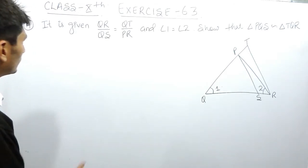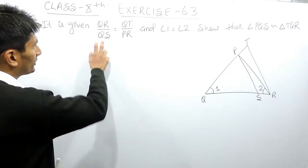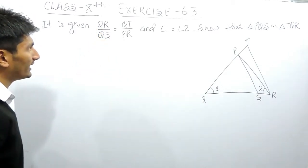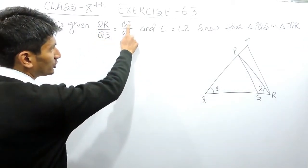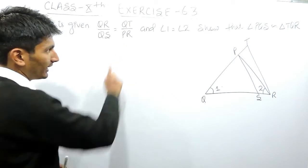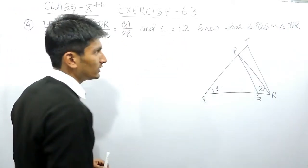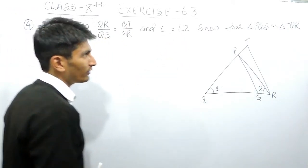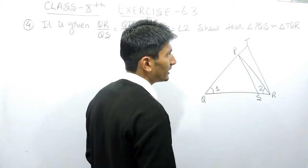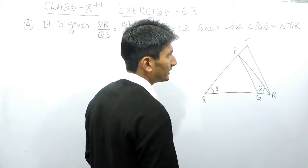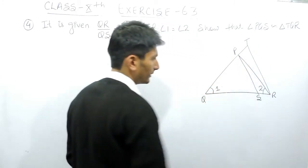The question says: the ratio between QR and QS is given equal to the ratio between QT and PR, and angle 1 is given equal to angle 2. You have to prove that triangle PQS is similar to triangle TQR. This is the triangle here.